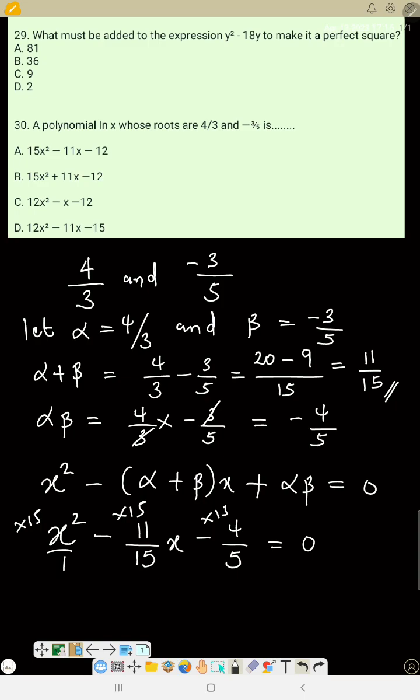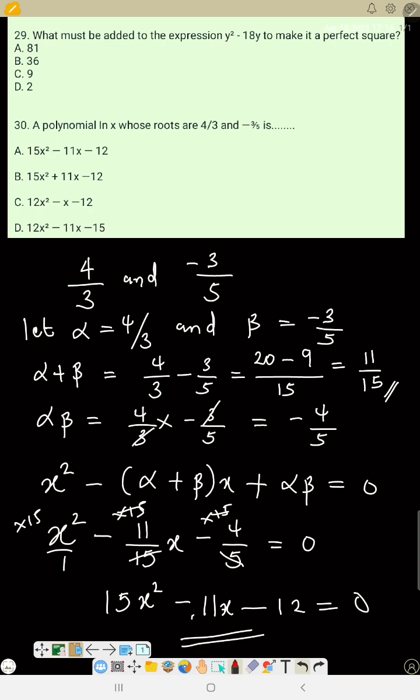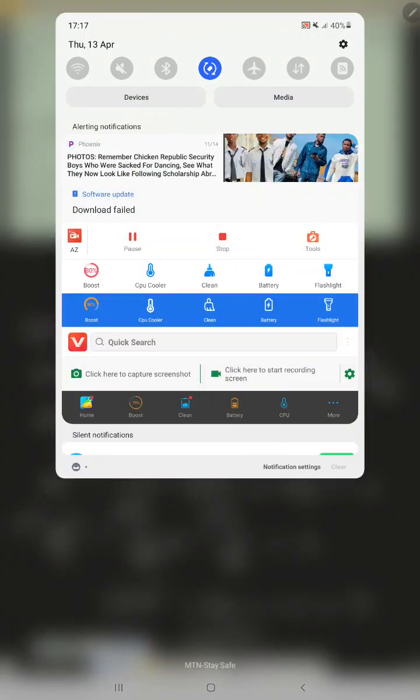Multiply each term by 15. This gives 15x squared minus 11x, and 15 times minus 4 over 5 equals minus 12. So 15x squared minus 11x minus 12 equals 0. That is the polynomial, which is option A. We are through with the questions. Thank you.